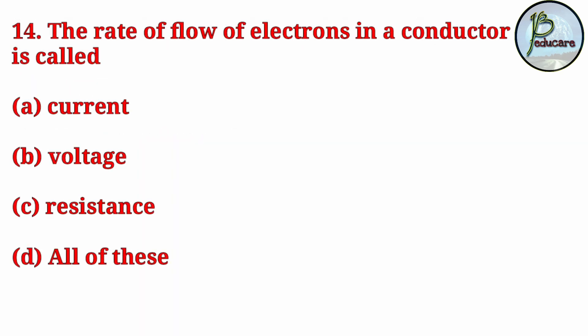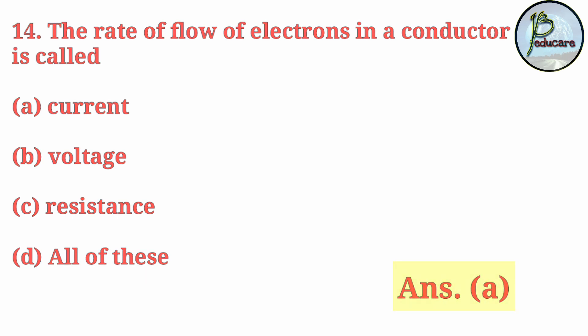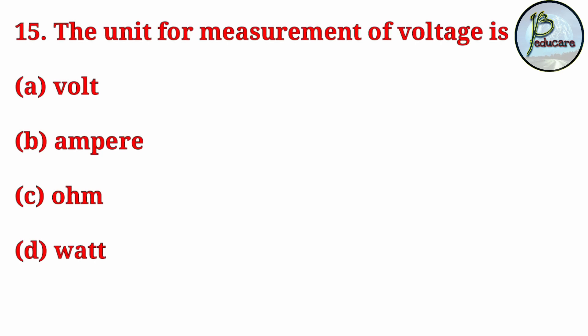Next question: The rate of flow of electrons in a conductor is called what? The correct answer is A, volt — referring to the unit of potential difference. The unit of voltage or potential difference is volt.